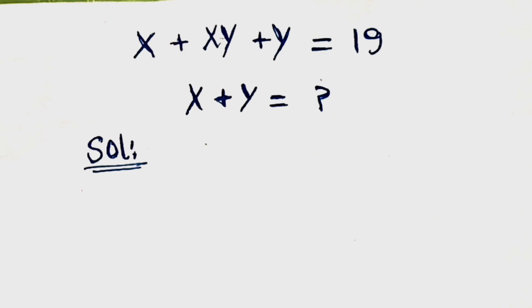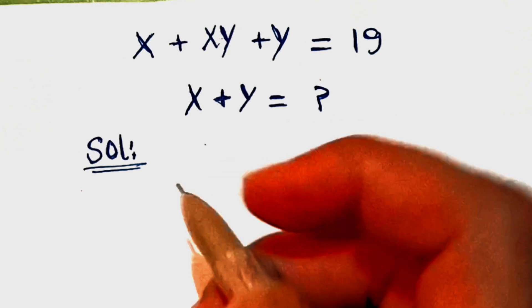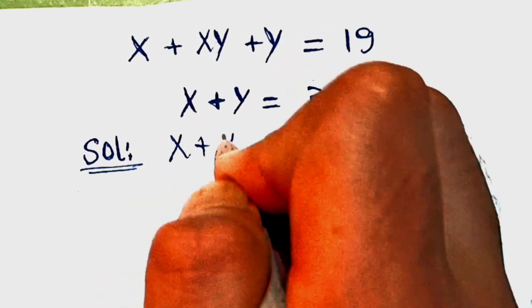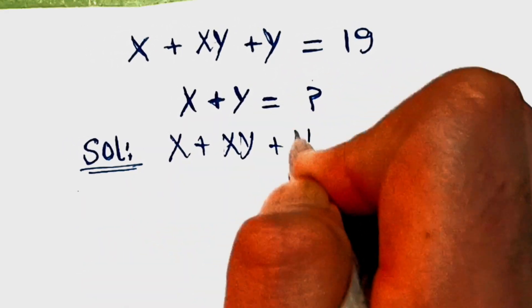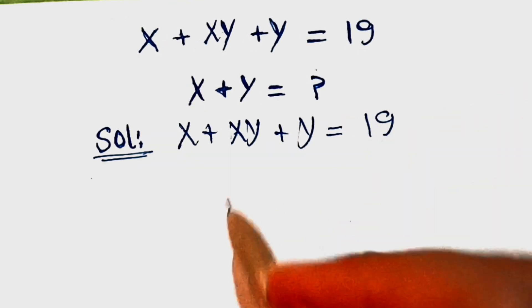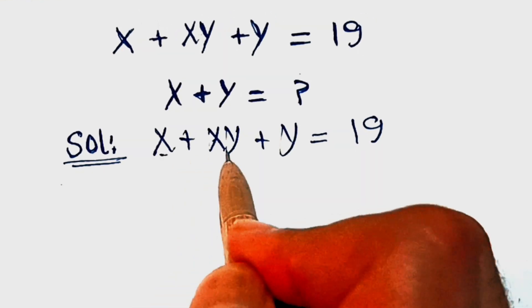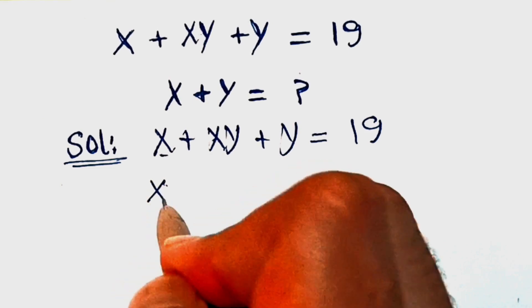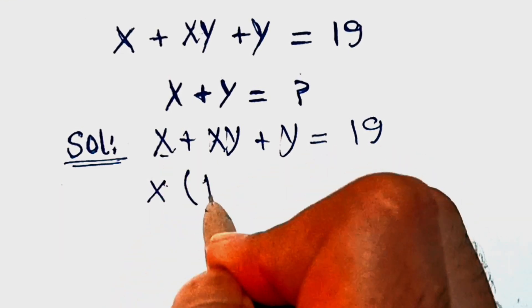We have x plus xy plus y equal to 19. Find x plus y. Let's write x plus xy plus y equal to 19. From here, we'll take x as a common factor.